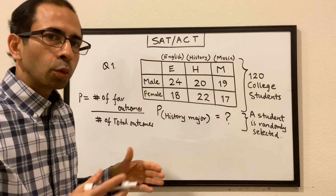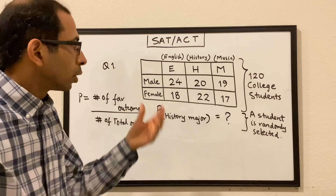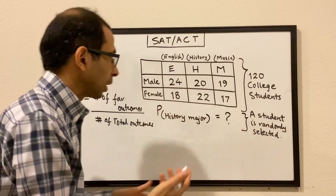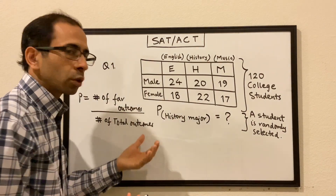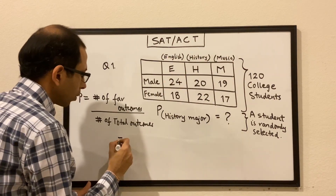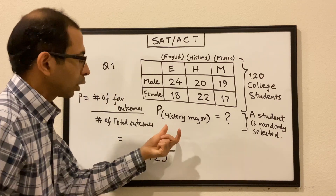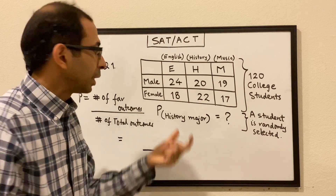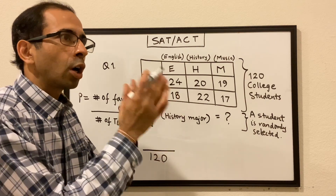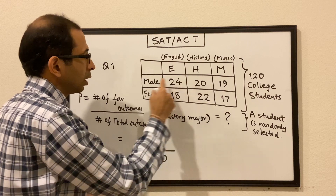It's very important for us to understand what is the boundary from which we are trying to find the probability. In this case, the question says that a student is randomly selected from the overall group, so the total number of outcomes is 120. Our denominator becomes 120. We are trying to find the probability of students doing a major in history — not even talking about gender — so how many students are doing a major in history? 20 male and 22 female.